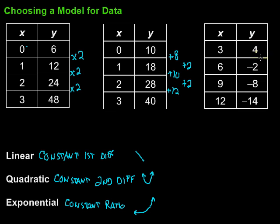Then finally, let's take a look at this last one. Here, we're going from 4 to negative 2, that would be minus 6. Negative 2 to negative 8, that would be minus 6. Negative 8 to negative 14 would be minus 6. Which model? Linear, because we have that constant first difference.